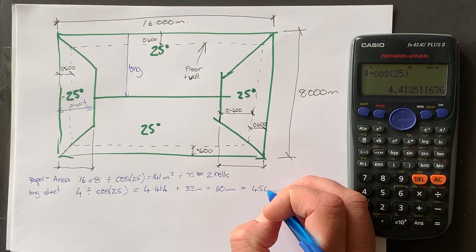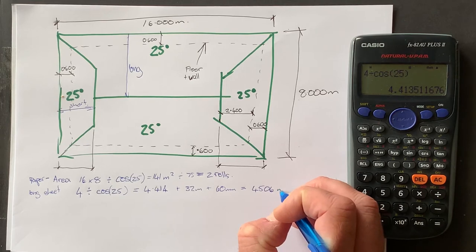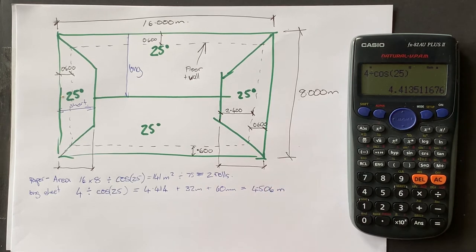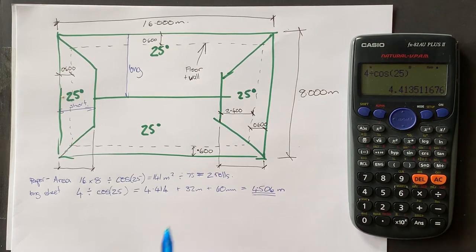And that equals 4.506 meters. Okay. So that's how long the sheet of iron would be.